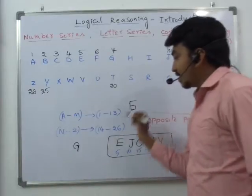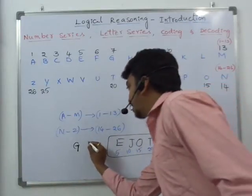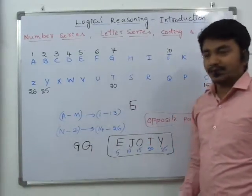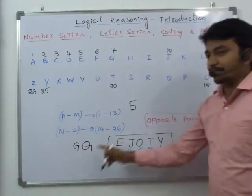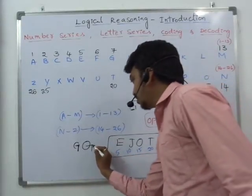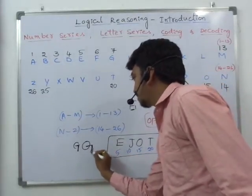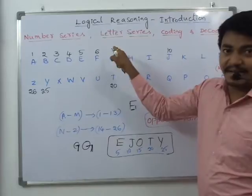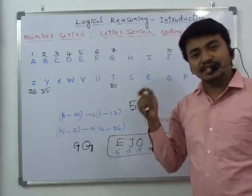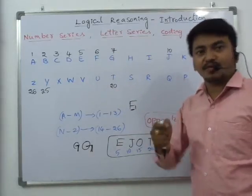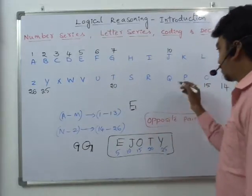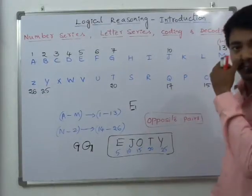Similarly, if you see Q — it also contains a 7 shape. But 7 is already given to G. The next number having 7 as one of its digits is 17, so Q is 17.